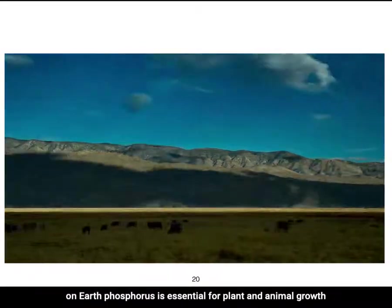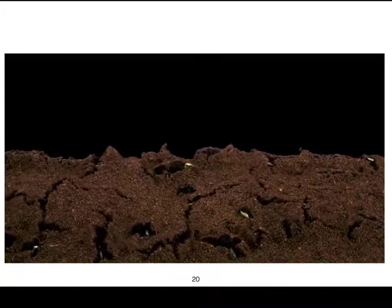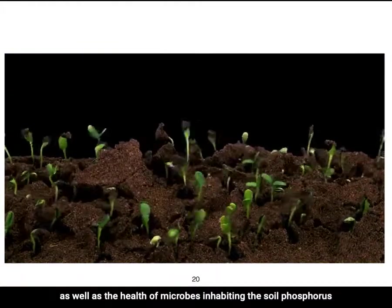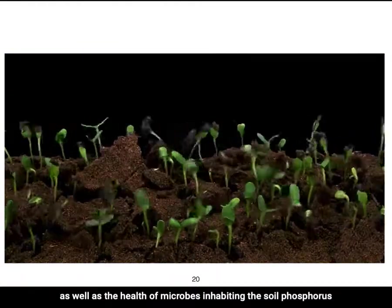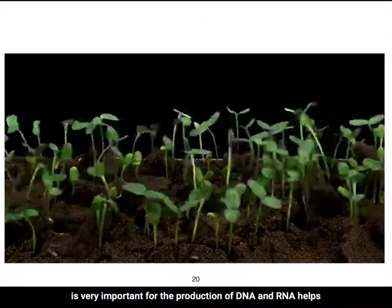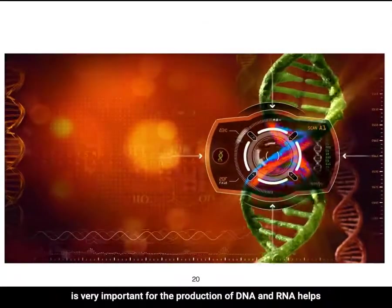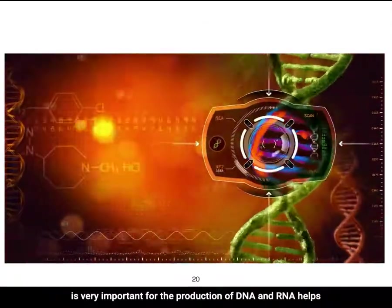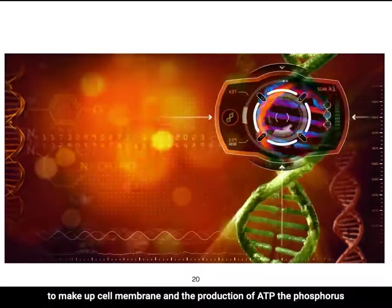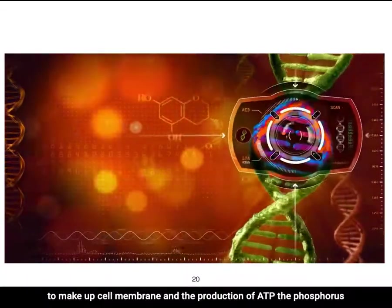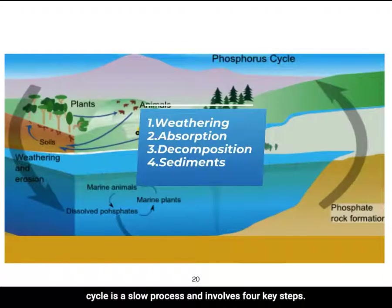Phosphorus is essential for plant and animal growth, as well as the health of microbes inhabiting the soil. It is very important for the production of DNA and RNA, helps to make up cell membranes, and the production of ATP. The phosphorus cycle is a slow process and involves four key steps.